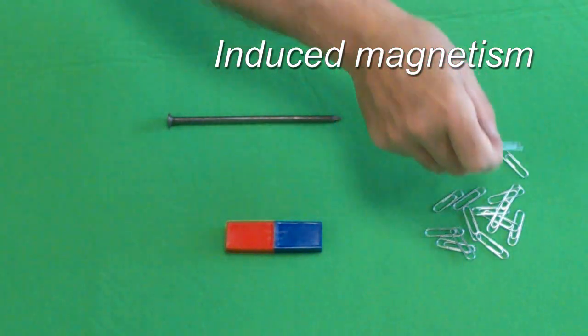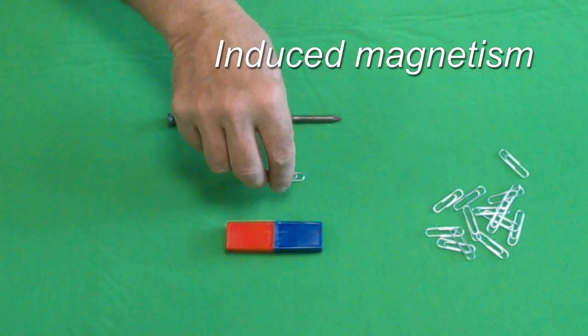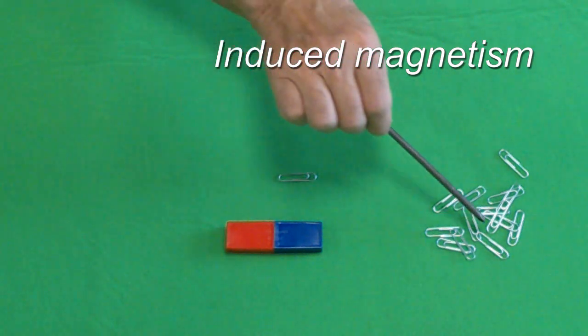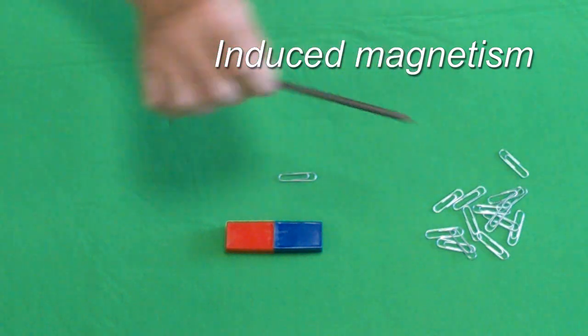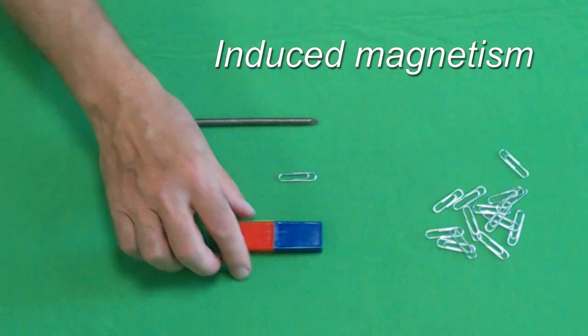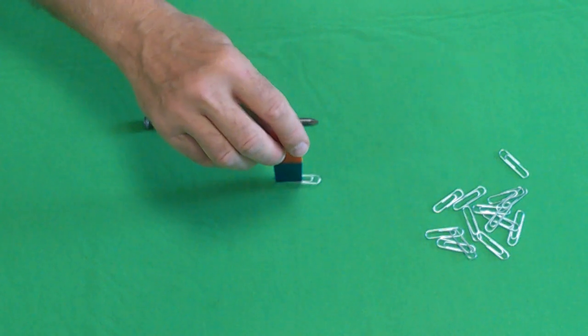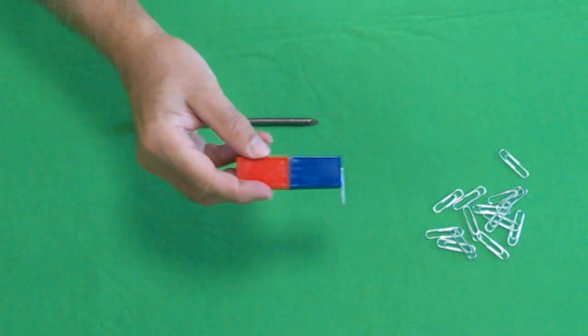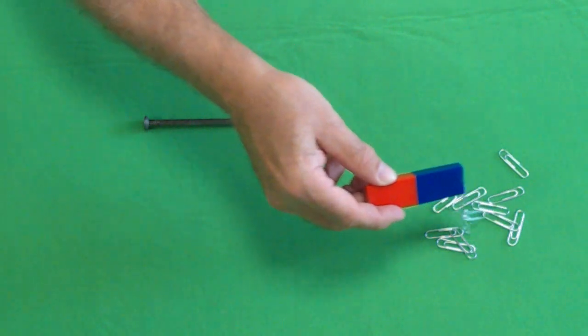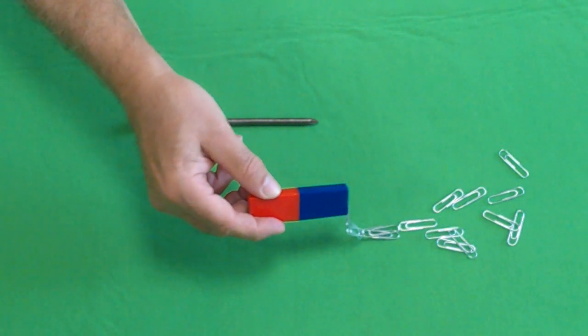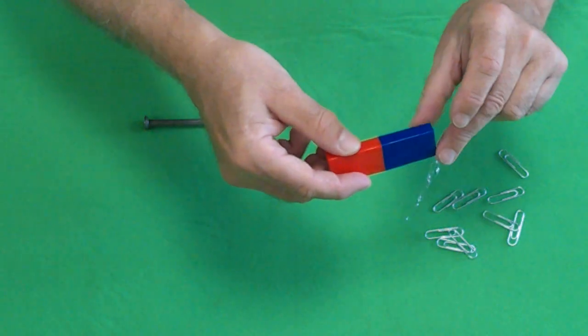Paper clips and a steel nail are not normally magnetic. You can see here the magnet and the clips are not at all attracted. Steel, however, is a magnetic material, so both the paper clips and the nail experience a force in a magnetic field. Both the clips and the nail can be attracted to the magnet.